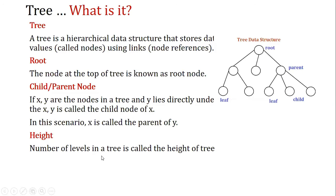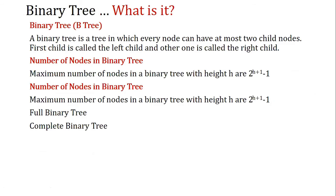The number of levels in a tree is called the height of a tree. A binary tree is a tree in which every node can have at most two child nodes — the first side is called the left child and the other is called the right child.